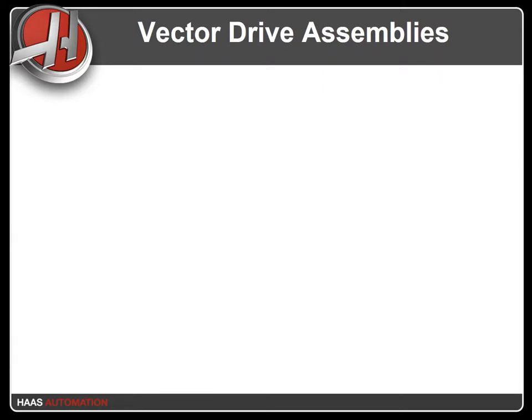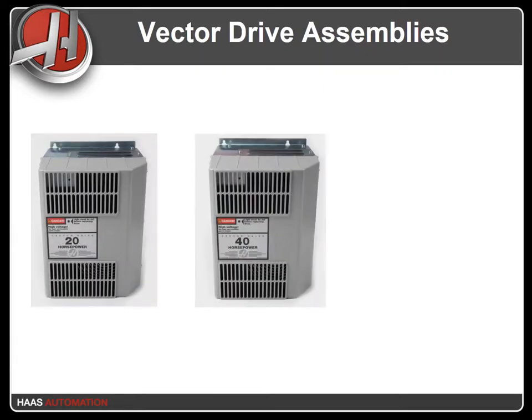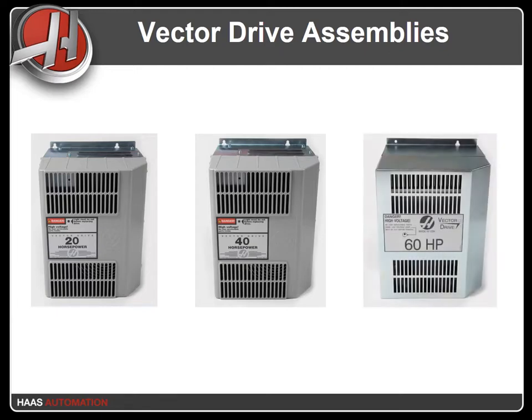The Haas Vector Drive Assembly is the source of power for the spindle motors on Haas CNC machines and the source of DC power for the servo amplifiers. There are three versions of the Haas Vector Drive: the 20, 40, and 60 horsepower assemblies. All three operate the same way.